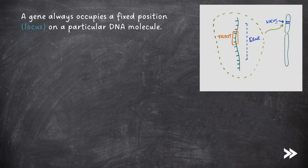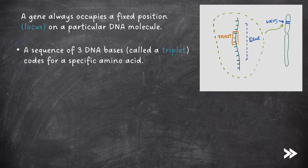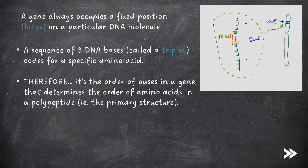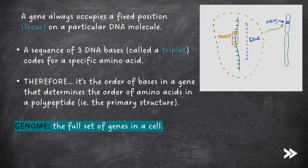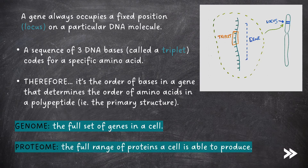A gene always occupies a fixed position, called a locus, on a particular DNA molecule. A sequence of three bases, which is called a triplet, codes for a specific amino acid. Therefore, it's the order of bases in a gene that determines the order of amino acids in a polypeptide — i.e. the primary structure. The genome is the full set of genes in a cell, and the proteome is the full range of proteins a cell is able to produce.